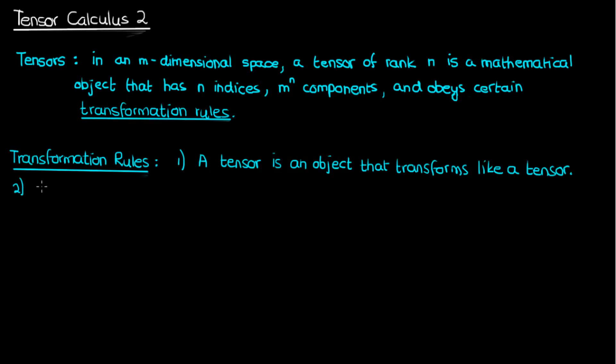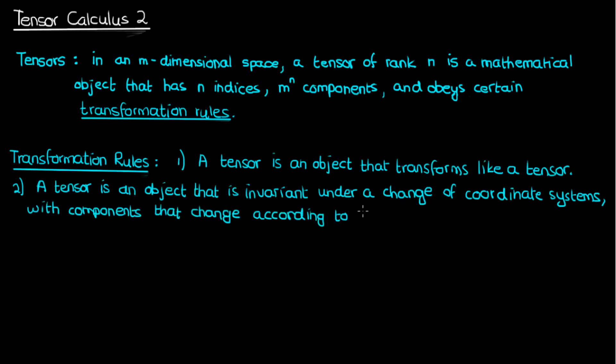The second and probably the most helpful way is that a tensor is an object that is invariant, i.e. it does not change, under a change of coordinate systems. But when we do change the coordinate system the components of that tensor must change according to a special set of mathematical rules.